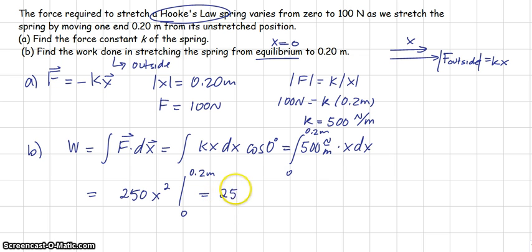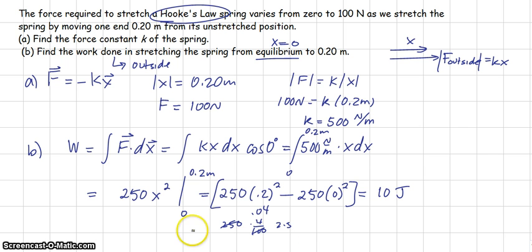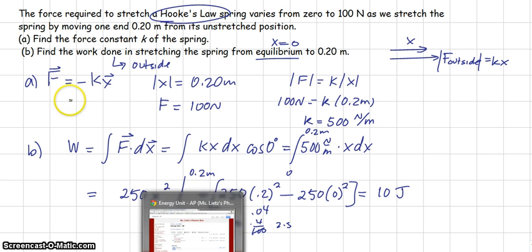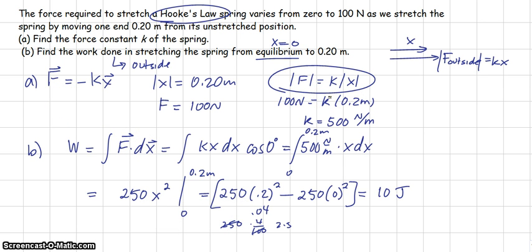So that's 250 times 0.2 squared, minus 250 times 0 squared. 0.2 squared is 0.04, which is 4 one-hundredths. So this is 250 over 100 is 2 and a half. 4 times 2 and a half is 10 joules. And so again, because we have a non-constant force, because we have the force function dependent on x, we must integrate from the initial position equilibrium to 0.2 meters. We take the antiderivative, we plug in the limits, and we come up with 10 joules.